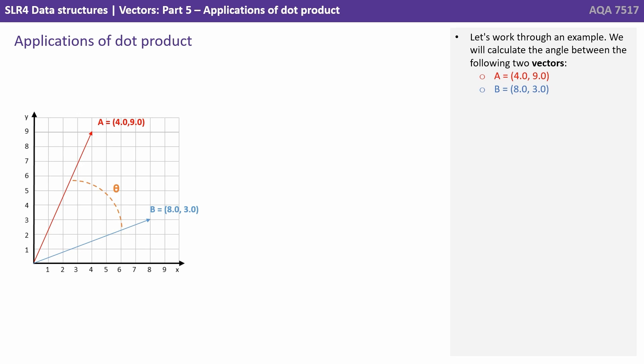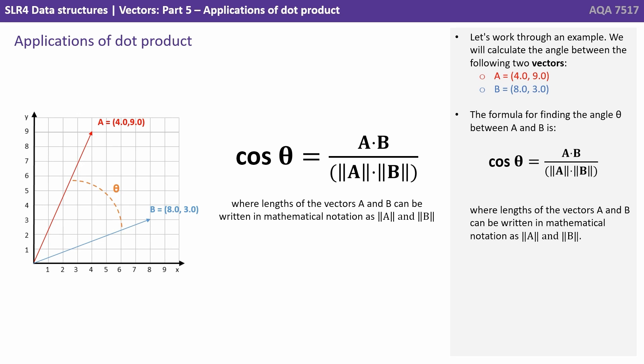Let's work through an example. We'll calculate the angle between the following two vectors A which is [4,9] and B [8,3]. The formula for finding the angle between A and B is shown here on the screen, where the lengths of the vectors A and B can be written in mathematical notation as shown.